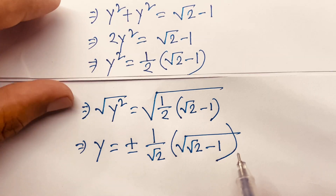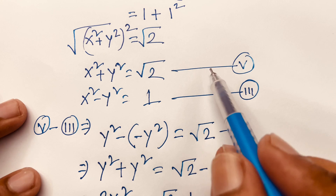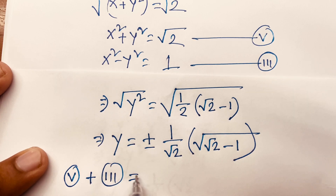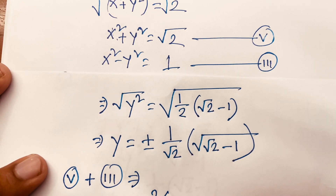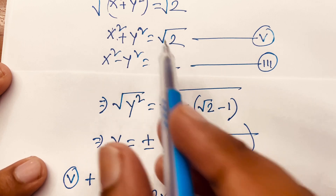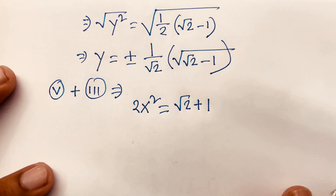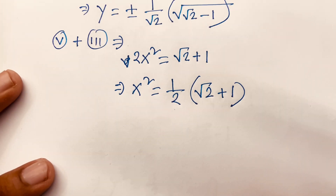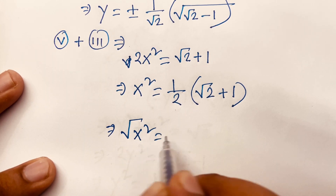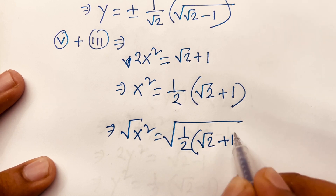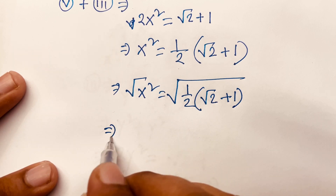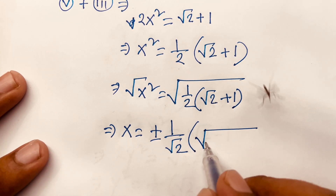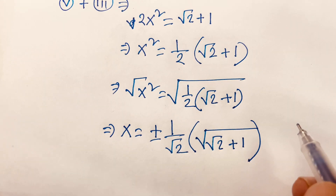If I add the fifth equation and the third equation, 2x squared equals square root 2 plus 1, so x squared equals (1/2)(square root 2 plus 1). Taking square root on both sides, x equals plus or minus (1 over square root 2) times square root of (square root 2 plus 1).